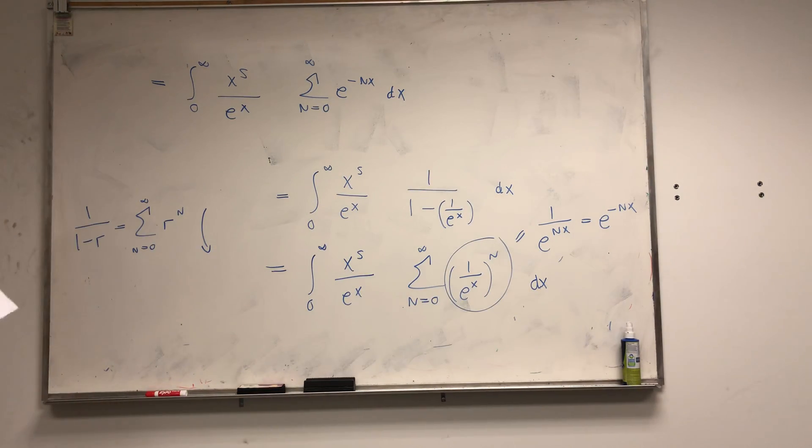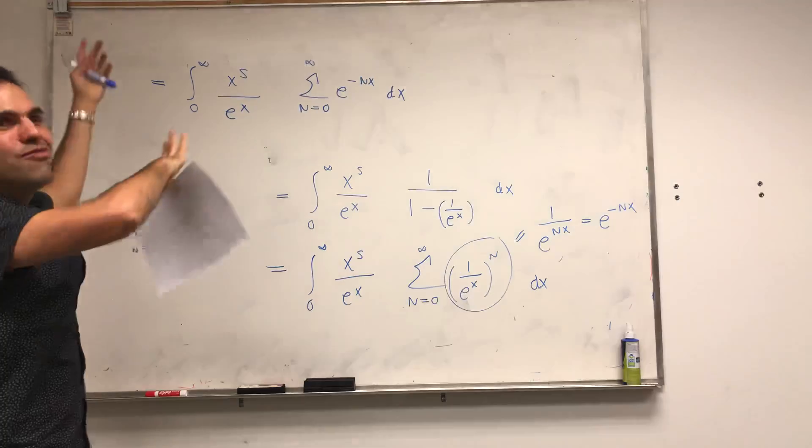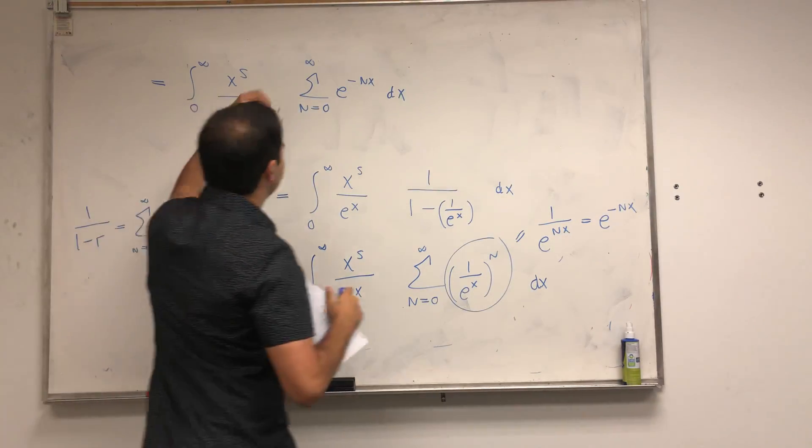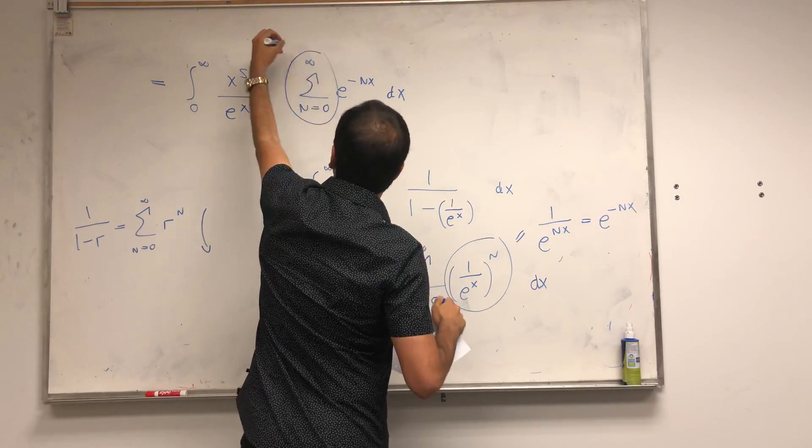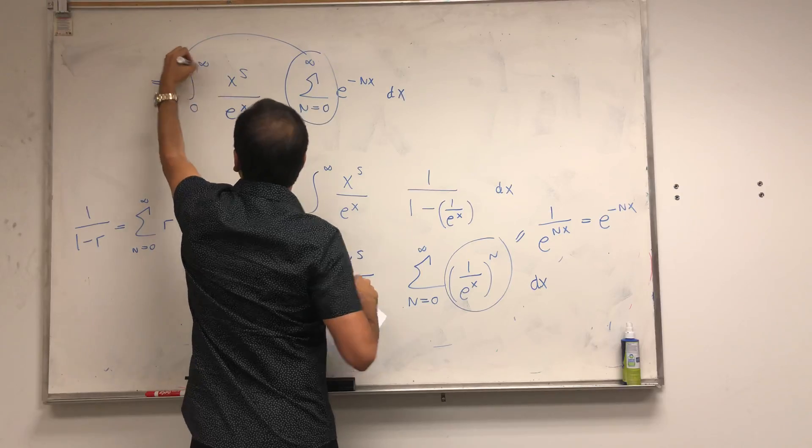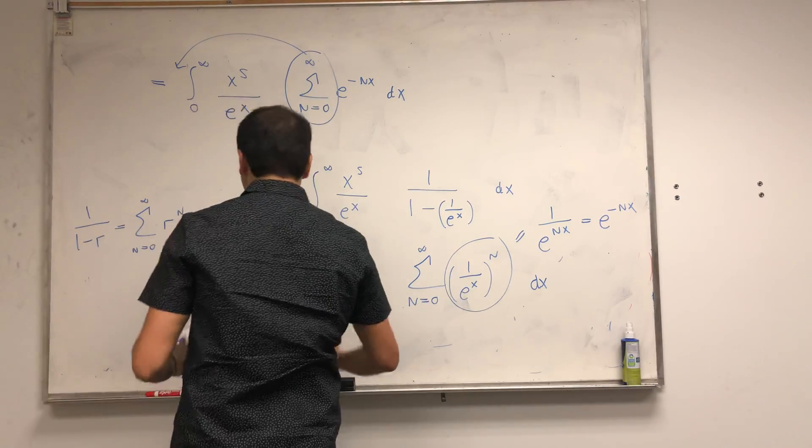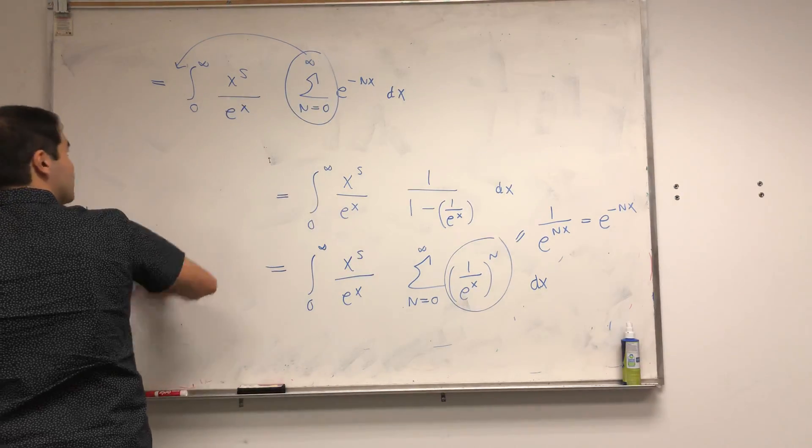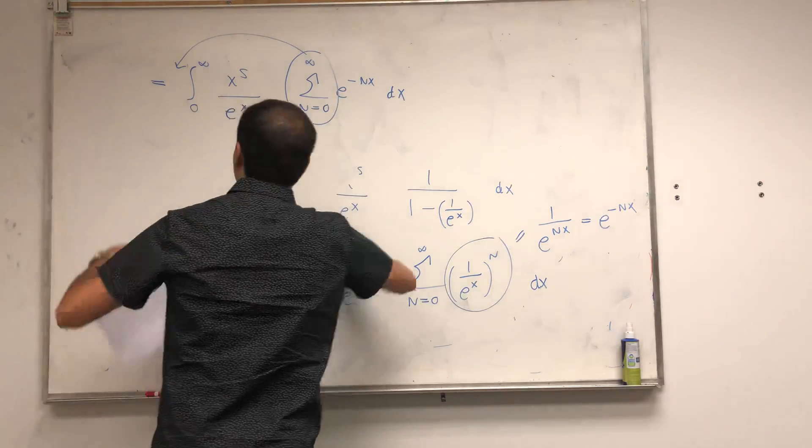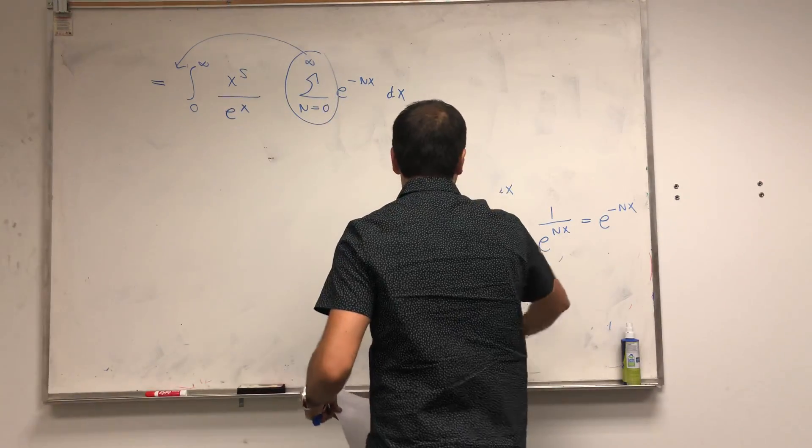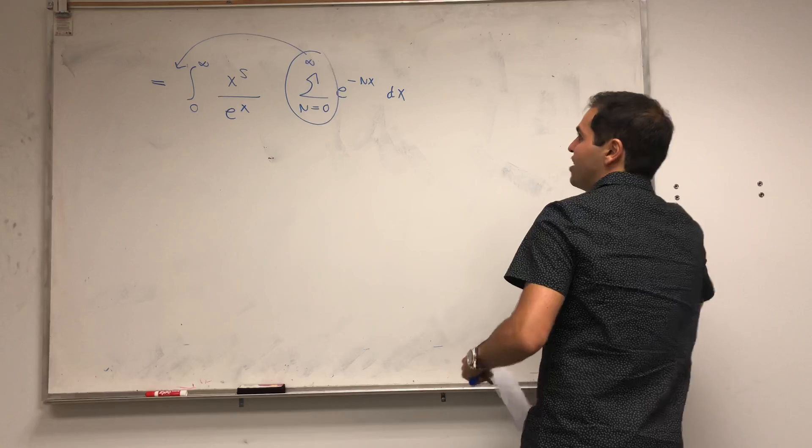And now I'm going to do something that's pretty illegal, but it turns out it's justified here by some Fubini kind of argument. I'm going to take this sum and put it outside. Again, not always true, but I think because everything is decaying to 0 pretty fast it's actually okay.